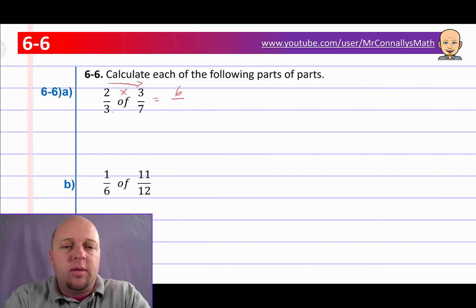And then on the bottom part, we've got three times seven, which is going to be a number. Hopefully you know what that is. If not, use a calculator. And put that in there. And you'll have your answer. All right, next, B.